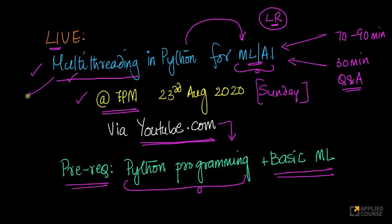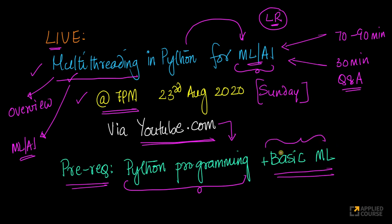There will be two parts: first, an overview of general multithreading in Python, then specifically for machine learning and AI applications. Even if you do not understand machine learning algorithms, you will be able to follow the first part with basic Python knowledge. See you all tomorrow at 7 PM on our YouTube channel — looking forward to some interesting conversations in the Q&A session after the concepts and code walkthrough.